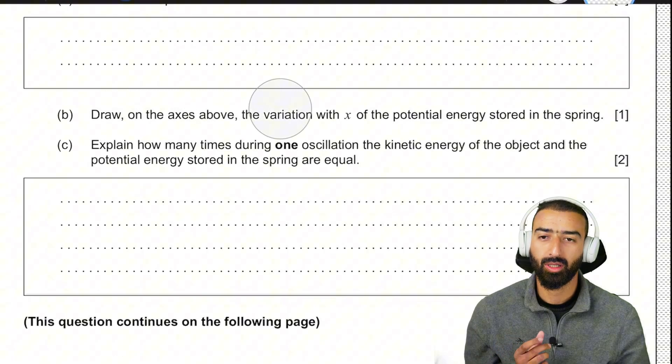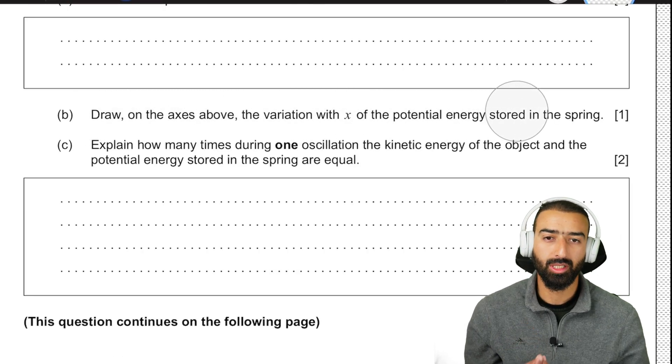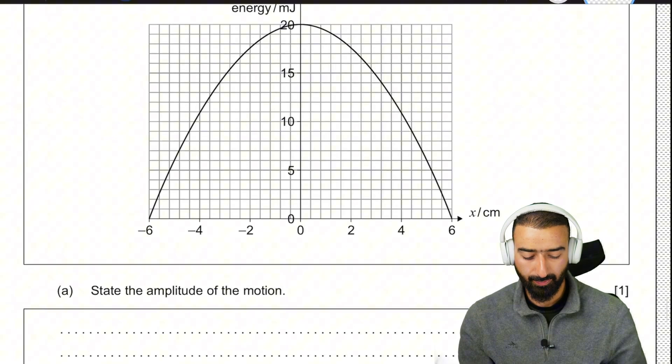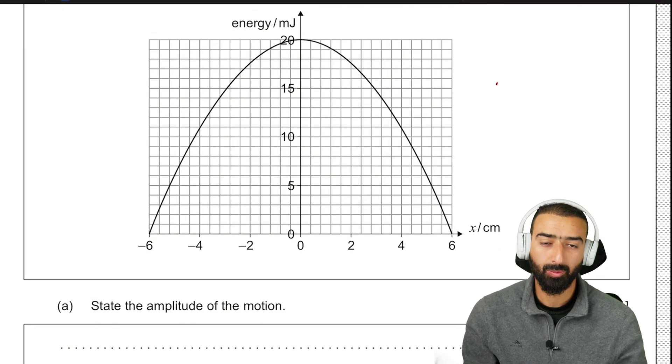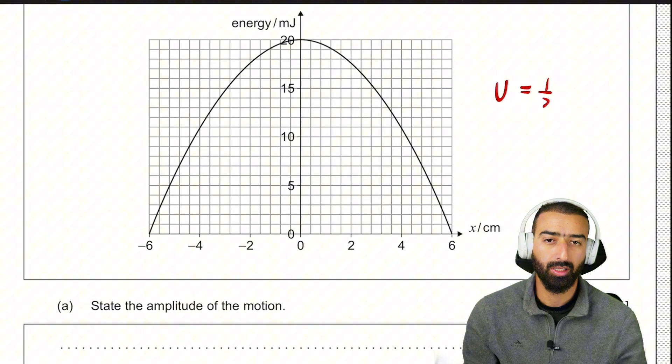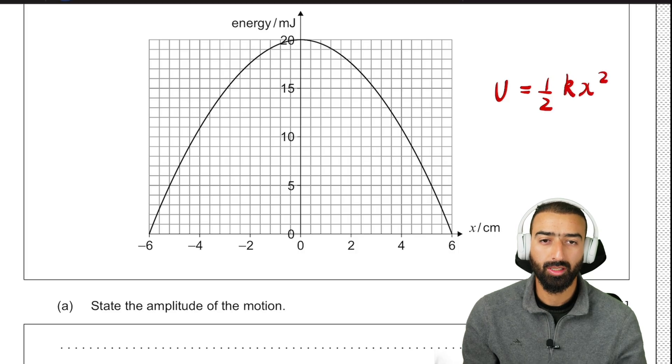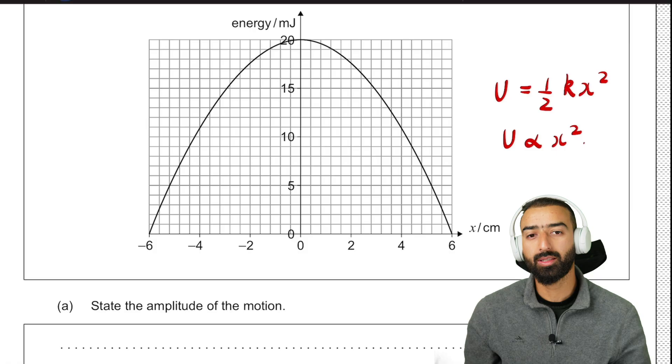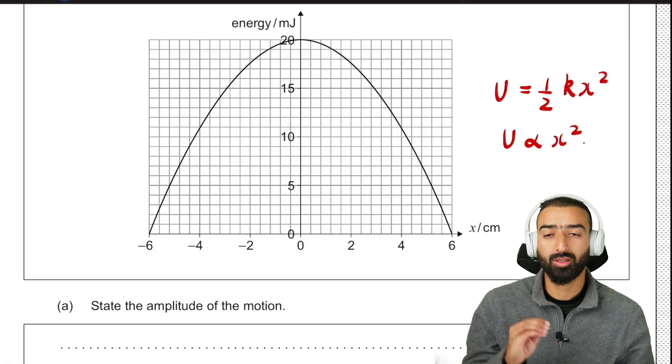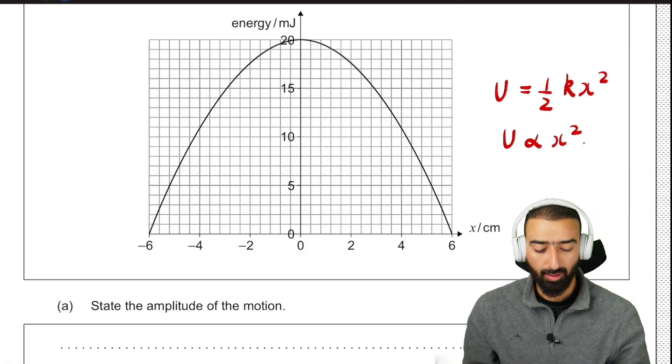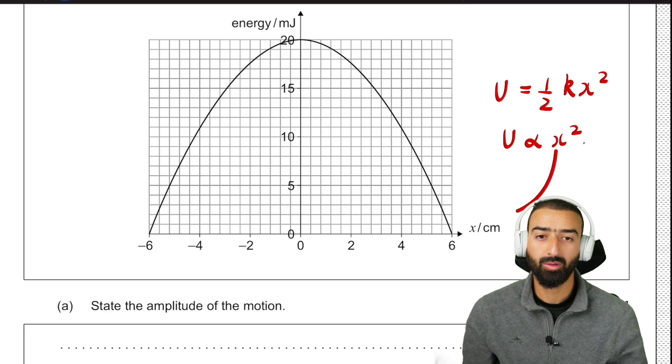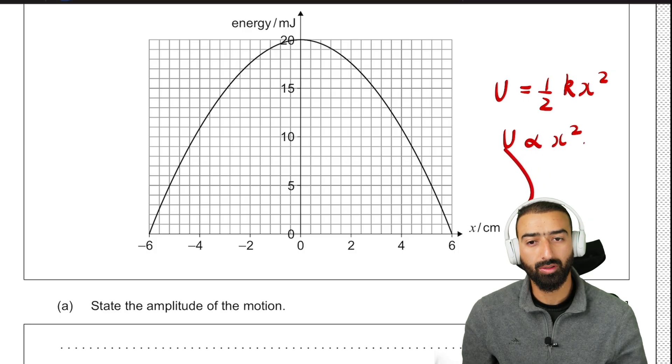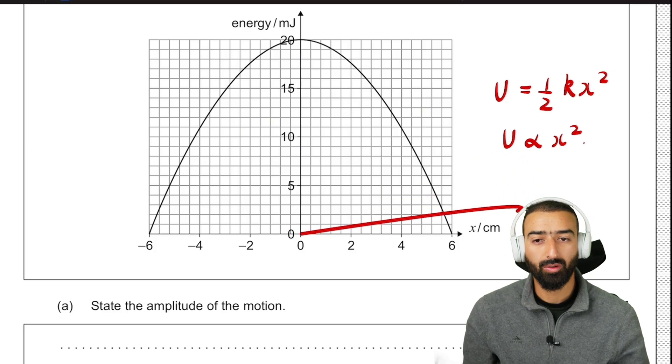Draw on the axis about the variation with x of the potential energy stored in the spring. We know the relationship of potential energy is half kx square. This means potential energy is proportional to x square. This means that potential energy must be a quadratic function. It's going to be a parabola. Furthermore, if x equals 0, the potential energy is going to be 0. So we have a point right over here.